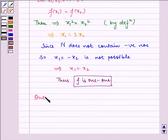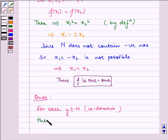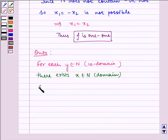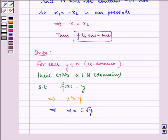Now let us check for onto. For every y ∈ N in co-domain, there exists x ∈ N of domain such that f(x) = y, which implies x² = y, which implies x = ±√y. That is, f(±√y) = (±√y)² = y.